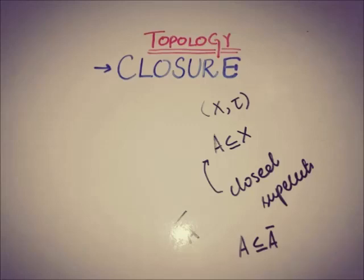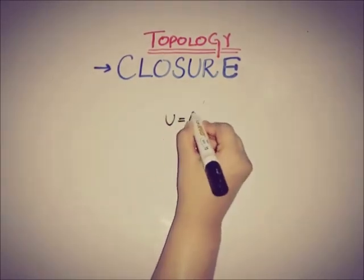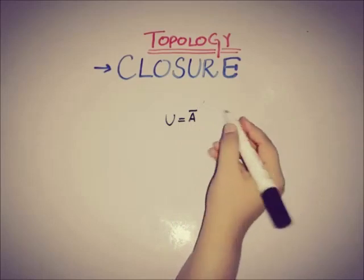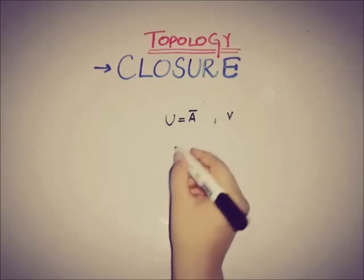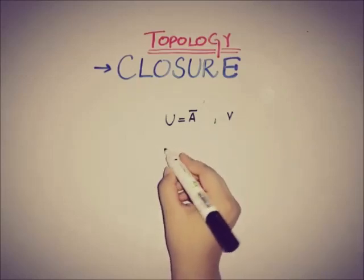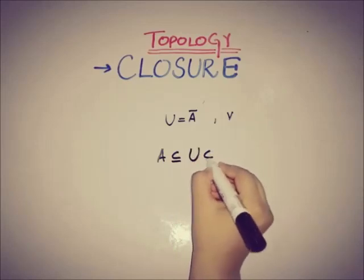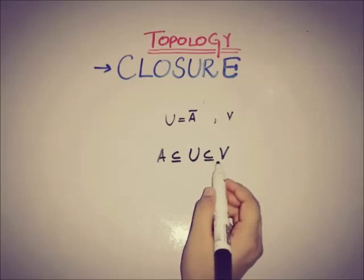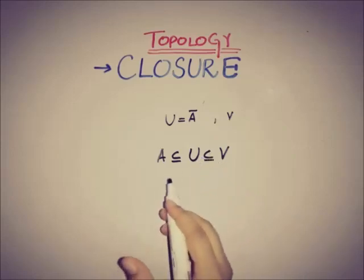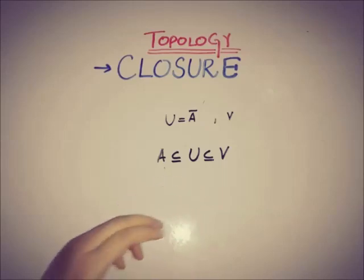For example, let's say we have two closed sets: U, which equals the closure of A, and V. We can say that A is a subset of U and U is a subset of V, because U and V are closed sets and the closure is the smallest closed set containing A.